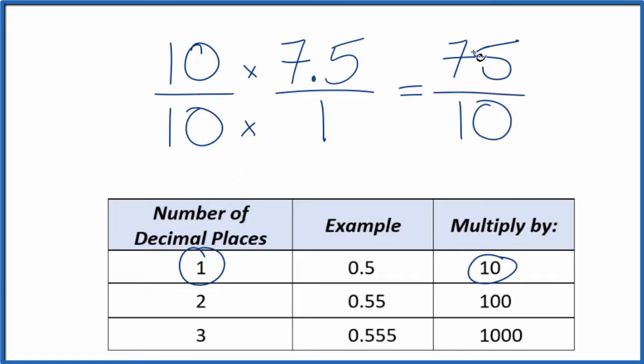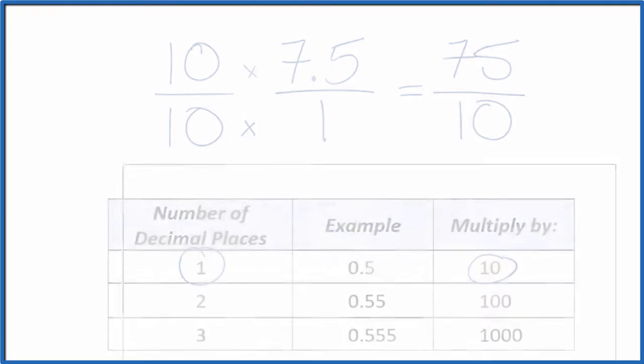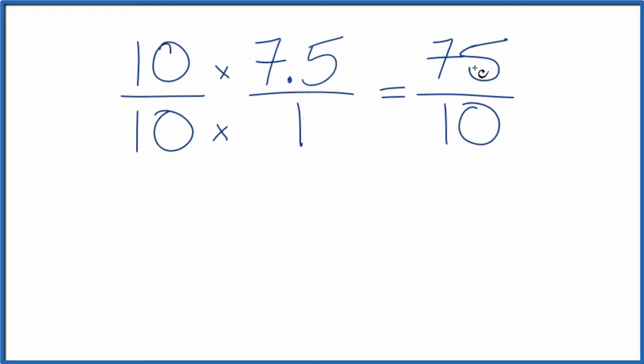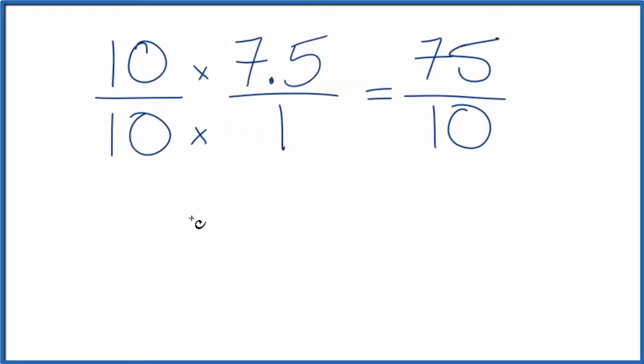So now we have a fraction, 75 over 10, and we can simplify this even further. Let's give ourselves some room. So 5 goes into 75 15 times. So we have 15, and 5 goes into 10 2 times, so we end up with 15 over 2.